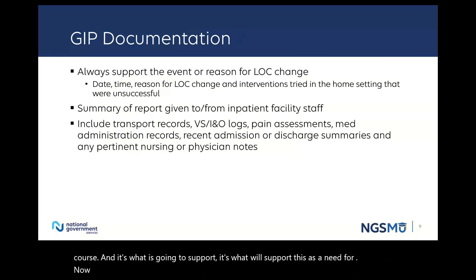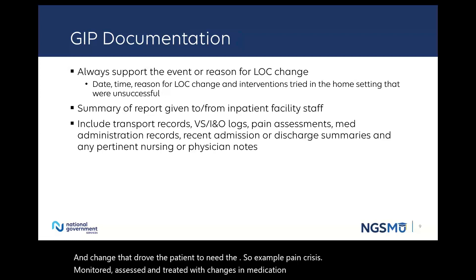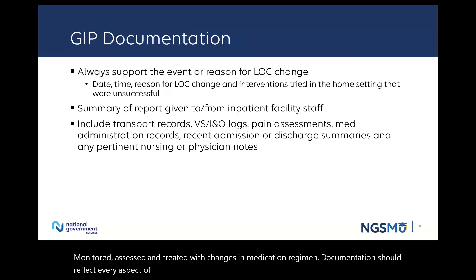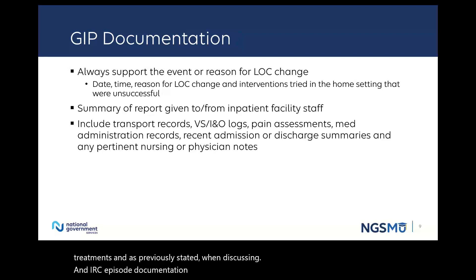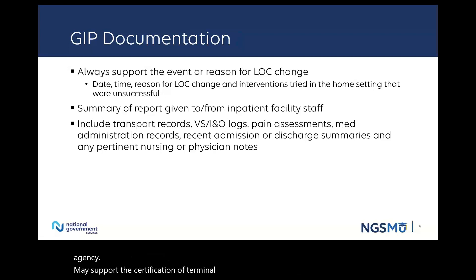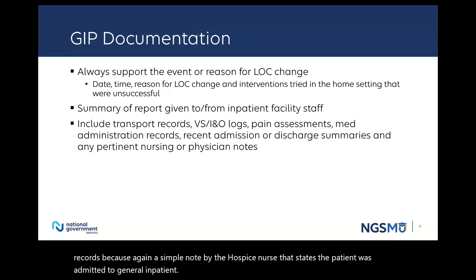Documentation should support the event or intensity of care and change that drove the patient to need the GIP. For example, pain crisis — monitored, assessed, and treated with changes in medication regimen. Documentation should reflect every aspect of the medication adjustments, interventions, and stabilization treatments. And as previously stated, when discussing an inpatient episode, documentation collaboration between the inpatient facility and the hospice agency may support the certification of terminal illness. It is suggested that the hospice agency obtain and submit the inpatient facility medical records. A simple note by the hospice nurse that states the patient was admitted to general inpatient may not be enough to support that GIP level of care.